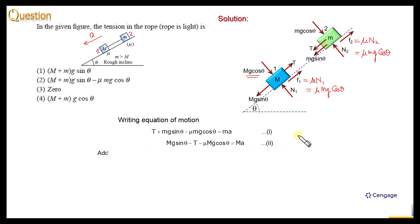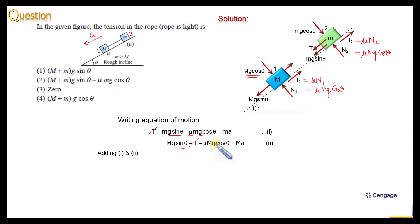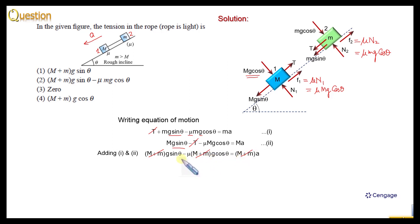Now we can add these two equations. If we add them, T will get cancelled. Taking g sinθ as common, this term becomes (M + m)g sinθ. Taking μg cosθ as common, this term becomes μ(M + m)g cosθ. On the right-hand side we have (M + m)a. The factor (M + m) cancels throughout, giving us the acceleration: a = g(sinθ − μcosθ).